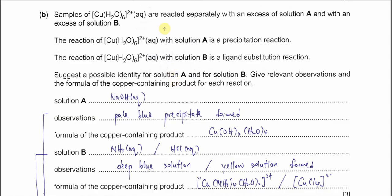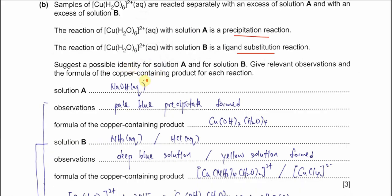Part B: A sample of hexa aqua copper 2+ ion reacted separately with excess of solution A and excess of solution B. With solution A, it forms a precipitate, and with solution B, it's just a ligand substitution. When the copper solution forms a precipitate, we know it must react with sodium hydroxide because it will form copper hydroxide.